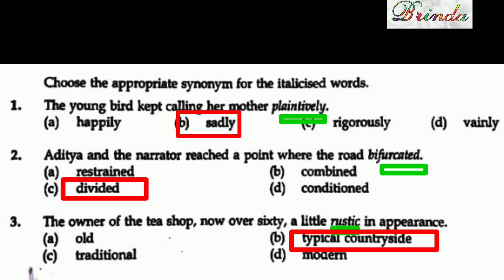Second question: 'Aditya and the narrator reached a point where the road bifurcated.' The options are restrained, combined, divided, conditioned. The road bifurcated means 'peri idu' — it divided. So the answer is divided.